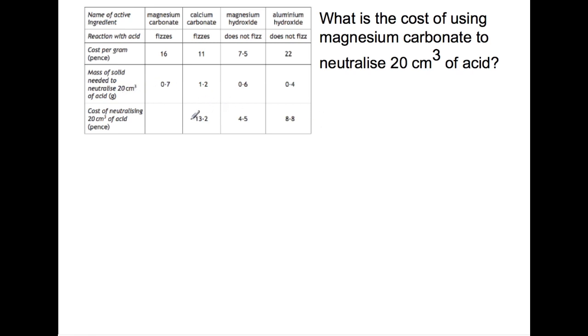And how much is needed in grams to neutralize 20 centimetres cubed of acid. For three of them you are given the cost of acid and for one magnesium carbonate you are not told how much it costs and that is what we have to calculate. So here we have the cost per gram so 16 pence per gram and we have the mass that is needed to neutralize 20 centimetres cubed of acid so we need 0.7 grams.